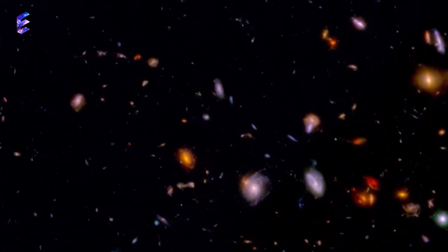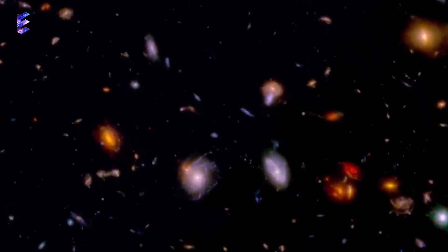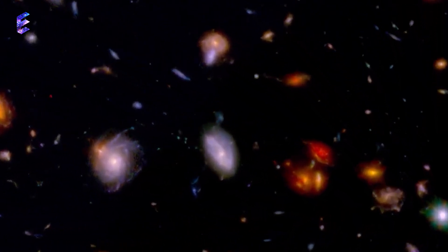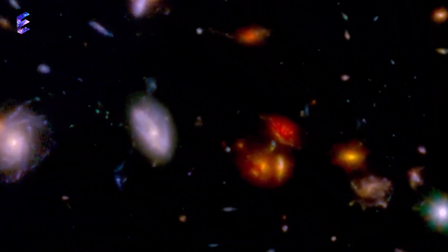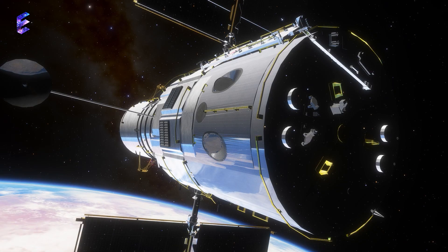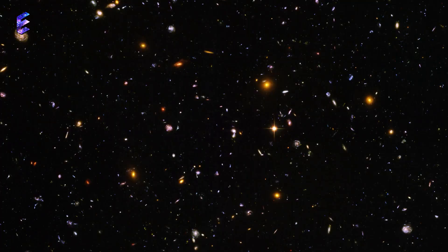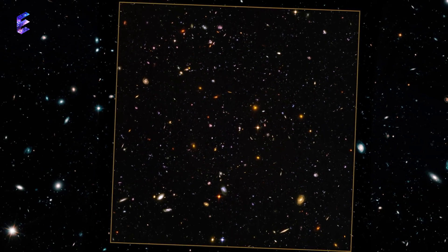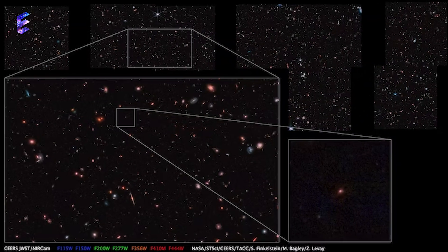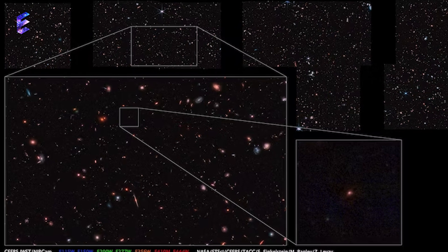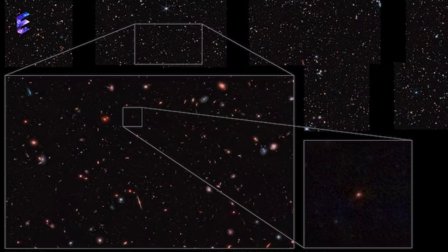CEERS-1019 and a handful of other super early galaxies are excellent targets for this research because they are relatively bright. The galaxy was identified in Hubble data in 2015, and at the time was the earliest, most distant galaxy observed. Subsequent observations confirmed its existence, but more detailed information remained elusive.